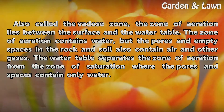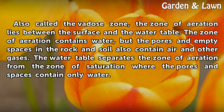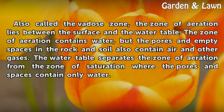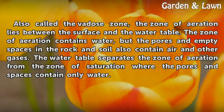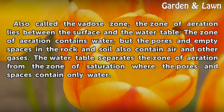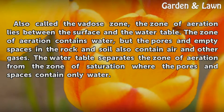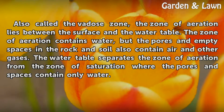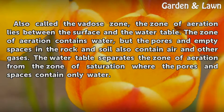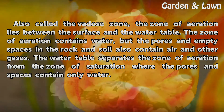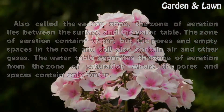Also called the Vadose zone, the zone of aeration lies between the surface and the water table. The zone of aeration contains water, but the pores and empty spaces in the rock and soil also contain air and other gases. The water table separates the zone of aeration from the zone of saturation, where the pores and spaces contain only water.